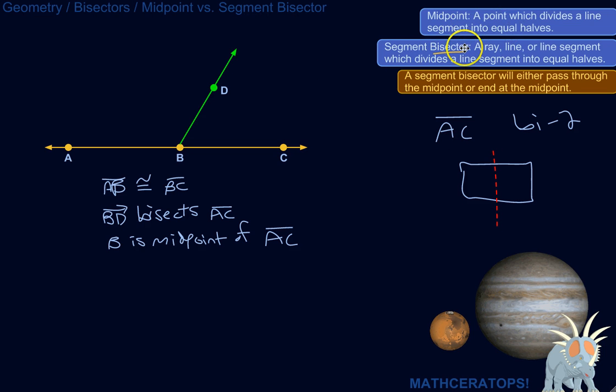So a segment bisector is something that splits up a line segment into two equal halves, okay? And it can be a ray, which is something like this, where it's got an end point and then the line goes off forever. A line, this could have gone straight through. Or a line segment, if maybe I put a point down here, the line segment D, F or something.